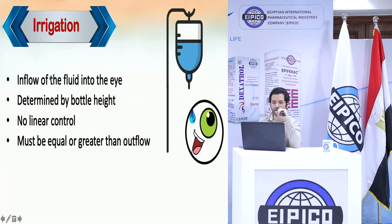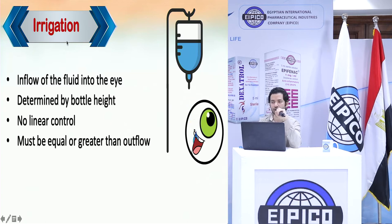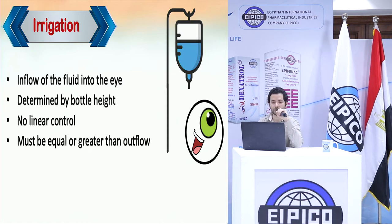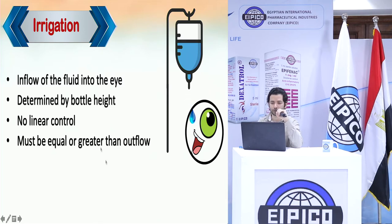Let's start with the first parameter: irrigation. Irrigation is the source of fluid coming inside the eye. This irrigation control in most phaco machines is not linear — meaning there is no button or foot pedal that causes a linear increase in irrigation. Instead, it is mostly determined by the bottle height. Some devices, like Centurion, have active fluidics where you can control the pressure of the fluid, but this is not the case in all devices.